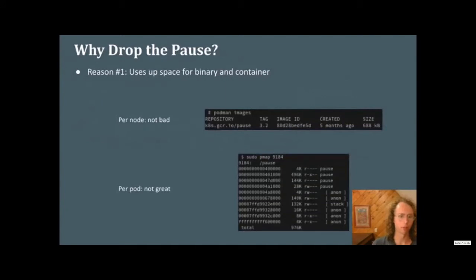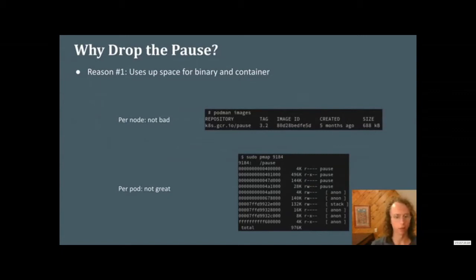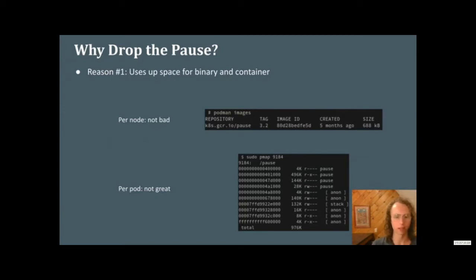So now that we know what the pause is, why would we drop it? We've been using this forever. The first reason is it uses up space for the binary, the container, and the image. Per node the image is pretty small — 600 kilobytes, not really anything anyone would sweat. However, the amount of memory per pod is not great. One meg per pod is really not bad, but Kubernetes nodes typically cap at around 250 pods, which means that's 250 megs — a little bit of space for your workloads.